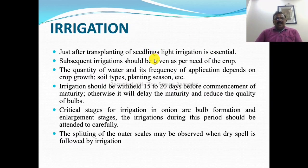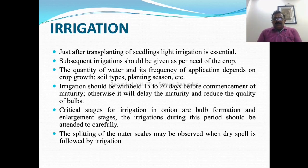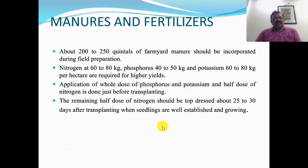Irrigation is most essential for onion crop production. Light irrigation is given just after transplanting; subsequent irrigations as per crop need depending on crop growth, soil type, and planting season. Irrigation should be withheld 15 to 20 days before maturity, otherwise it will delay maturity and reduce bulb quality. Critical stages for irrigation are bulb formation and enlargement stages. Splitting of the outer scale may occur when dry spells are followed by irrigation.